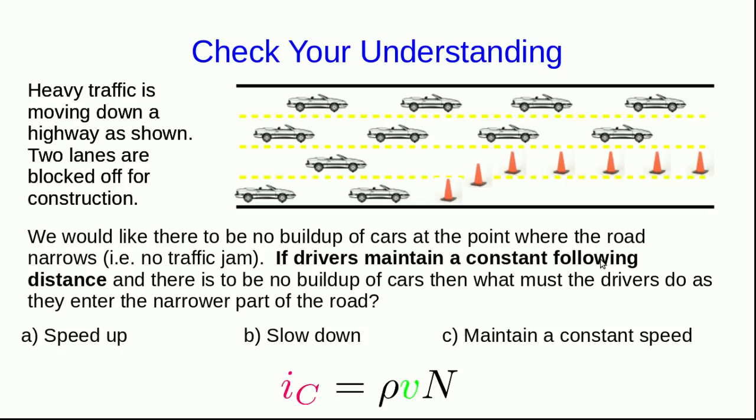Well, let's check your understanding of this set of ideas, because it's exactly the same as current in a wire. So, let's suppose we have heavy traffic going down a highway, and as shown, there are two lanes blocked off for construction. And so, we would say that the highway is narrowing at that point. Now, we would like for there to be no buildup of cars here where the highway narrows. In other words, we don't want a traffic jam.